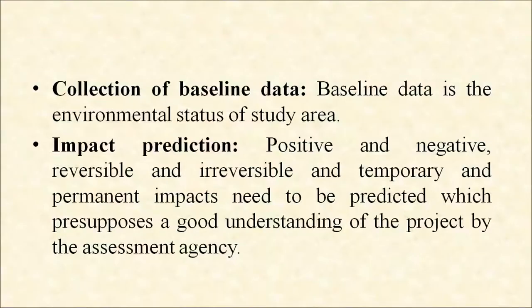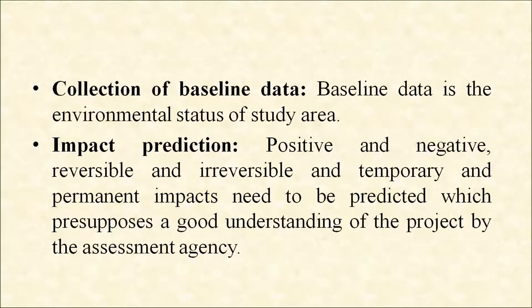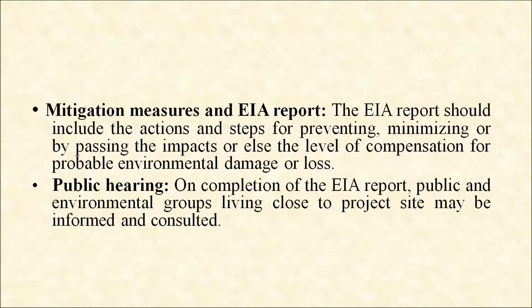Next is impact prediction — positive and negative, reversible and irreversible, and temporary and permanent impacts need to be predicted, which presupposes a good understanding of the project by the assessment agency. Next is mitigation measures and the EIA report — the report should include actions and steps for preventing, minimizing or bypassing the impact, or the level of compensation for probable environmental damage or loss. Next is public hearing — on completion of the EIA report, the public and environmental groups living close to the project site may be informed and consulted.